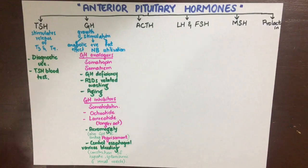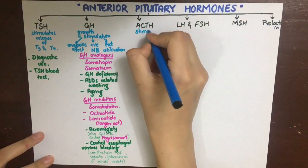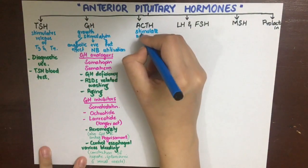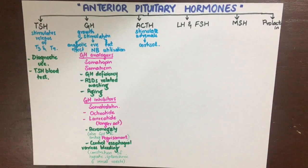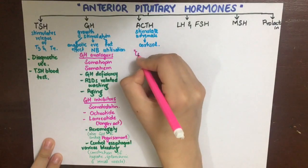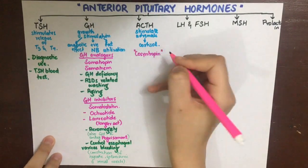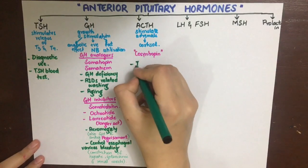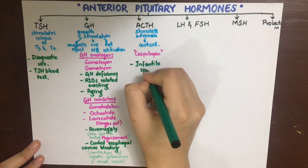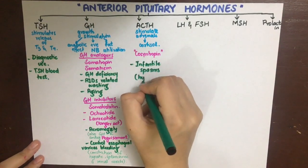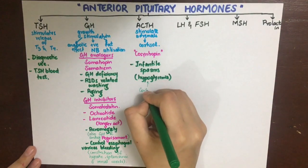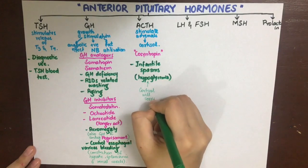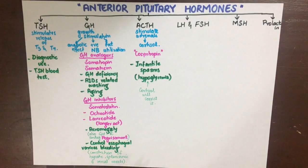The next hormone is adrenocorticotropic hormone, which stimulates the adrenal glands to secrete cortisol. The drug form is known as cosyntropin. It can be used in infantile spasms — doctors think these may occur due to hypoglycemia, so by giving ACTH it stimulates cortisol production, and cortisol will handle the decreased glucose and increase it.